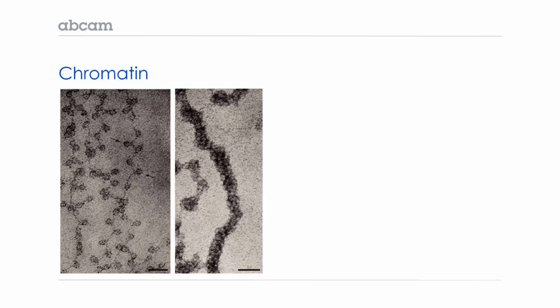Here are classic electron micrographs showing what chromatin looks like with the distinctive beads-on-a-string structure on the left and more compacted chromatin on the right.